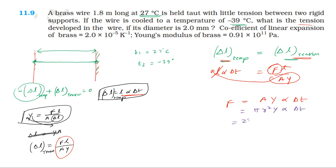Pi is 22 by 7. The diameter is 2 millimeters, so radius is 1 millimeter equals 10 to the power minus 3 meters. R squared gives 10 to the power minus 6. Y is 0.91 times 10 to the power 11. Alpha is 2 times 10 to the power minus 5.